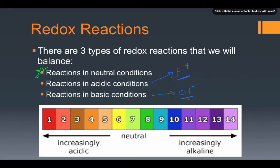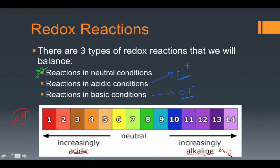You'll notice the pH scale, which is a way of measuring the acidity of our solution. pHs below 7 are acidic, pHs above 7 are described as alkaline or basic, and a pH of 7 is neutral. Our reactions today deal with reactions happening at a neutral pH. Reactions in later videos will deal with either acidic conditions — pH below 7 — or basic conditions — pH above 7.